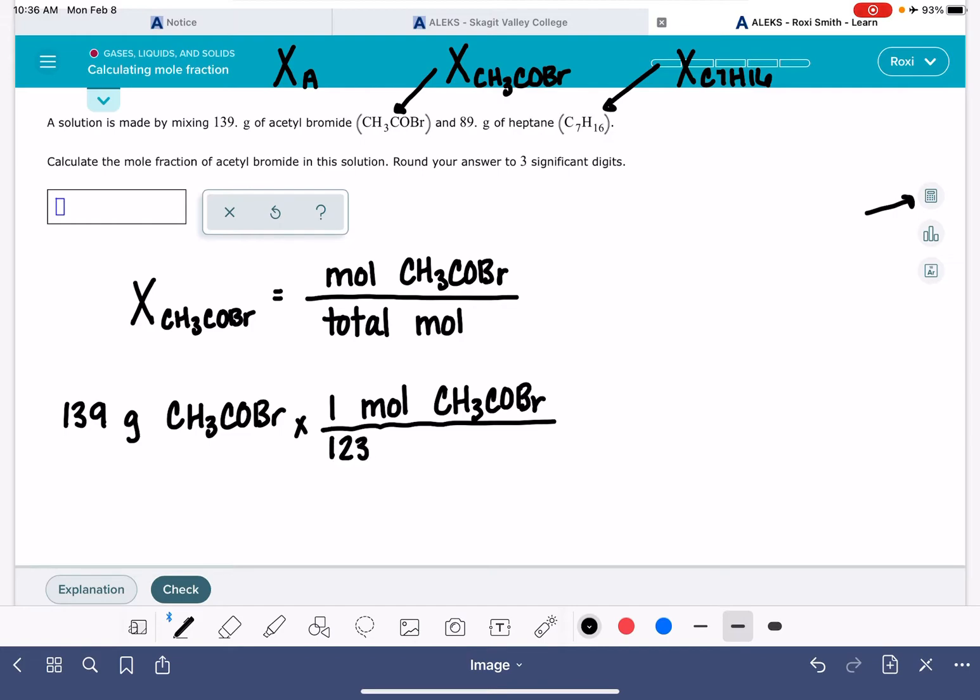And so it looks like we have about 1.13 moles of this substance, CH3COBr.